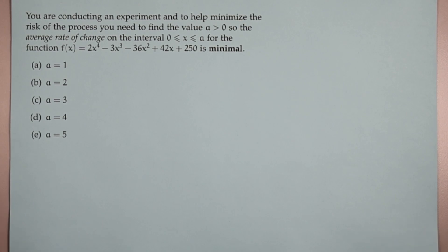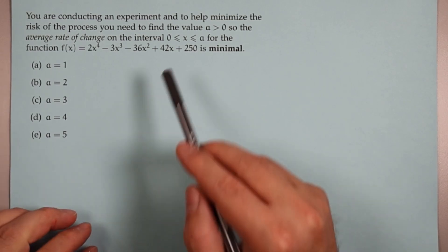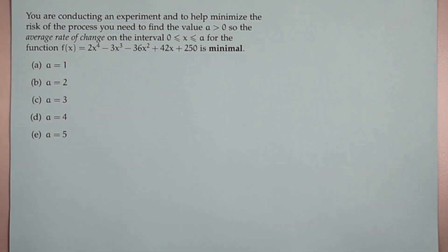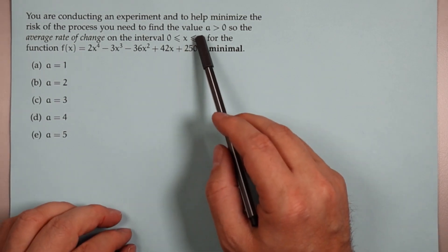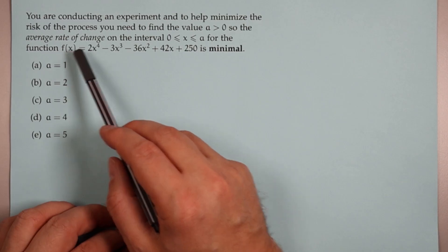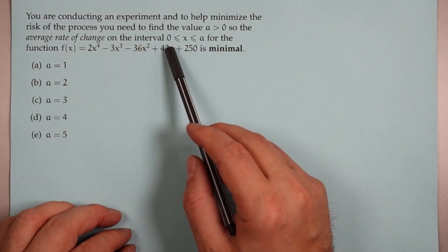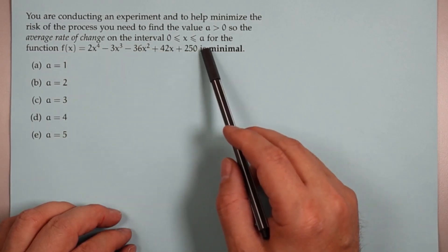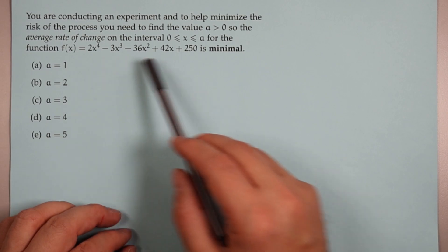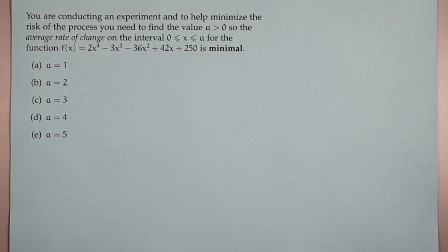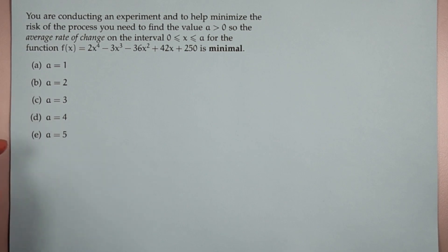You are conducting an experiment, and to help minimize the risk of the process, you need to find the value a greater than 0 so the average rate of change on the interval between 0 and a for a function is minimal. So we're trying to minimize this average rate of change. And our options are 1, 2, 3, 4, 5.